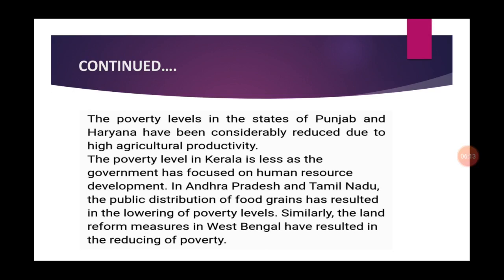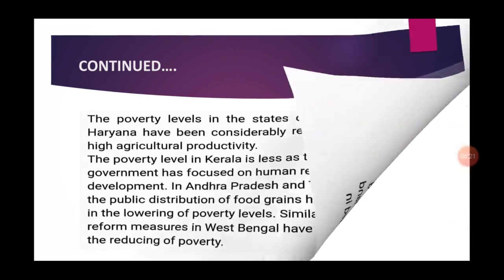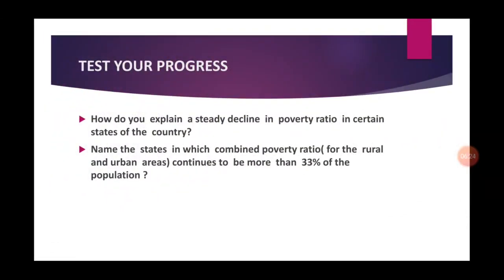There is a need to take steps to reduce poverty in other states also. Some questions are given here - try to answer these to check your understanding. How do you explain a steady decline in poverty ratio in certain states of the country? Name the states in which the combined poverty ratio for rural and urban areas continues to be more than 33% of the population.